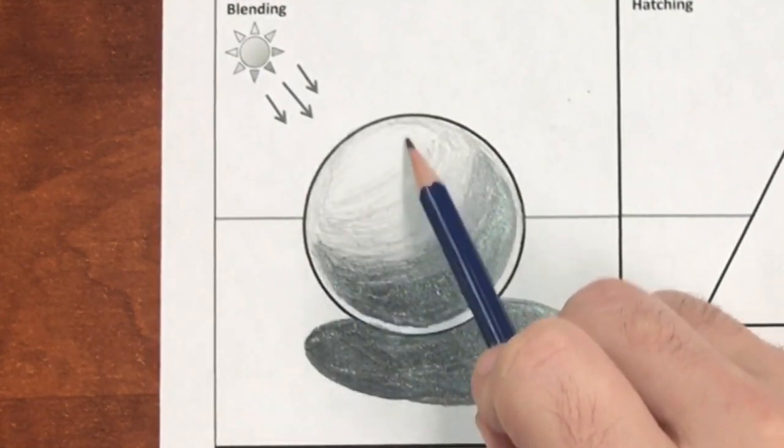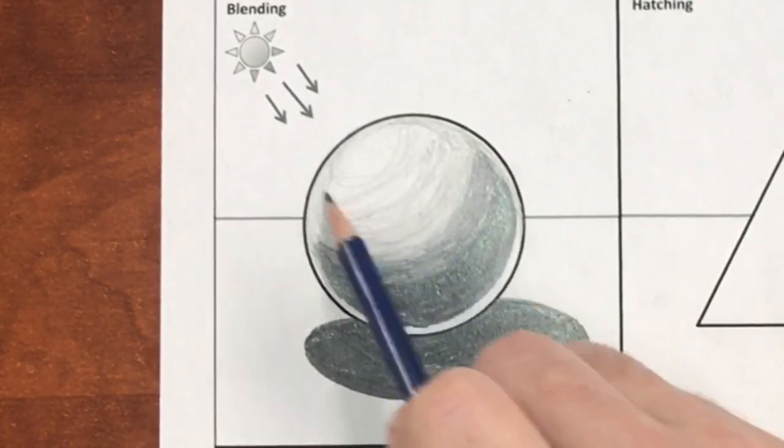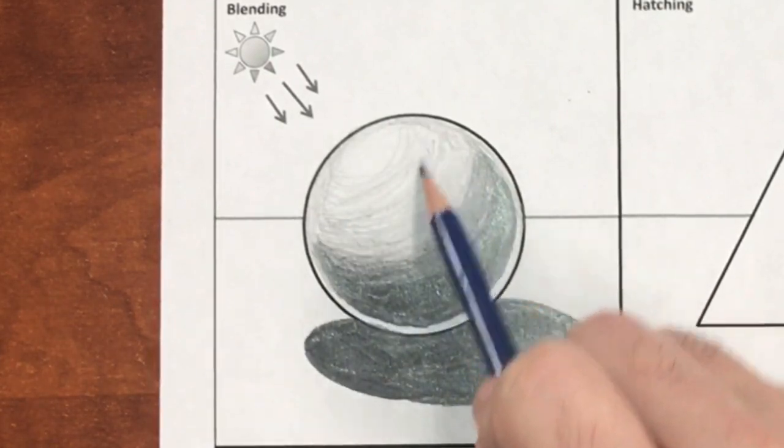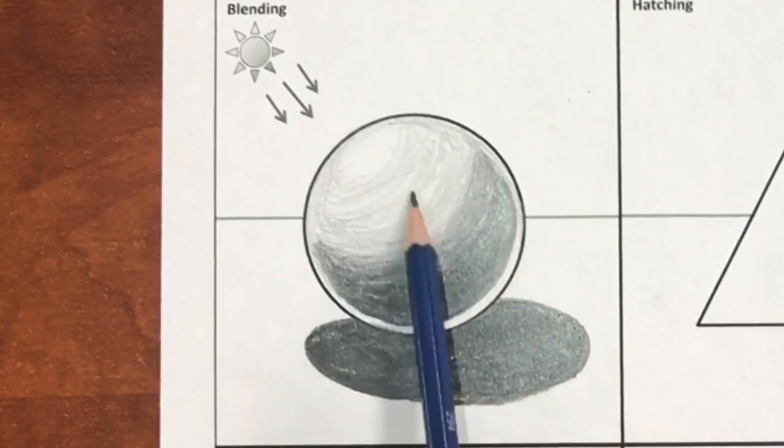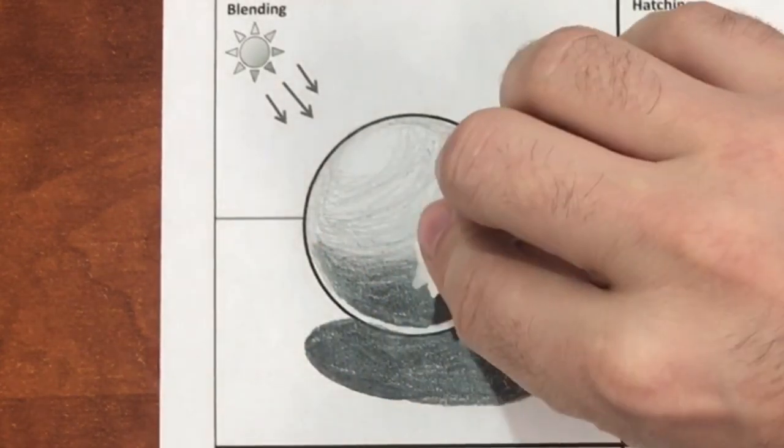At this stage in the drawing, I'm using a 2H pencil to create the lightest tones and leaving behind the white paper to show the highlight from where the light is hitting the sphere most directly.